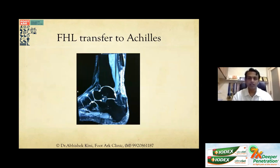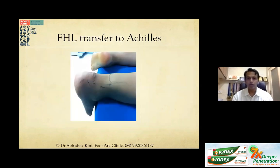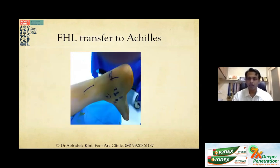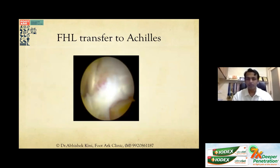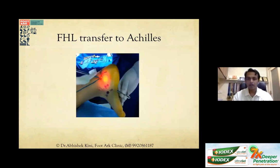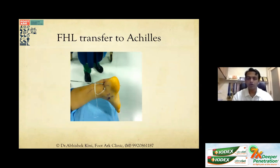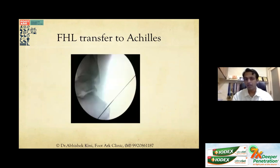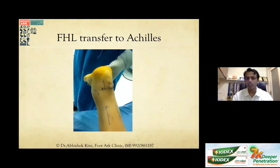In cases where degeneration is extensive or the gap between tendon and bone is too large, an FHL transfer is required. This can be performed open, mini-open, or endoscopically using the same posterior hindfoot arthroscopy portals. The FHL tendon is harvested from the hindfoot and transferred to the calcaneal tuberosity. This approach has evolved significantly, and with minimally invasive techniques, outcomes from Achilles repairs are now excellent.